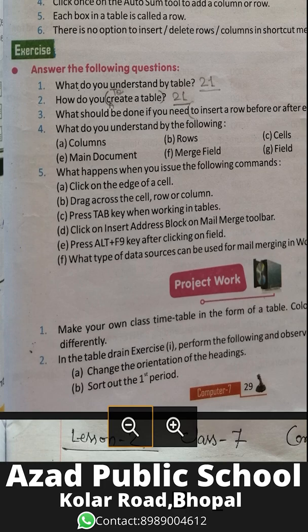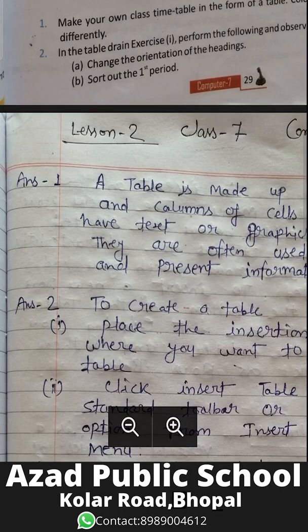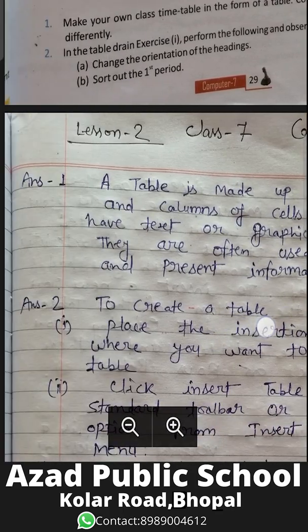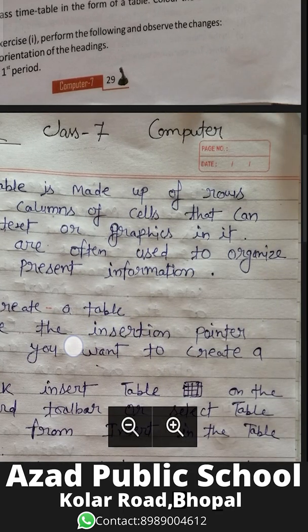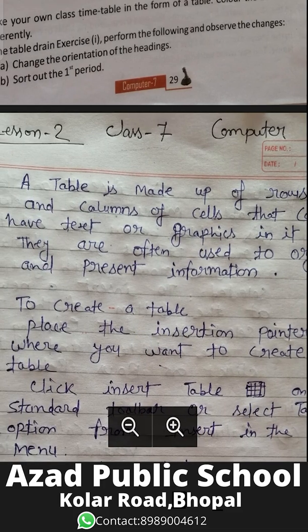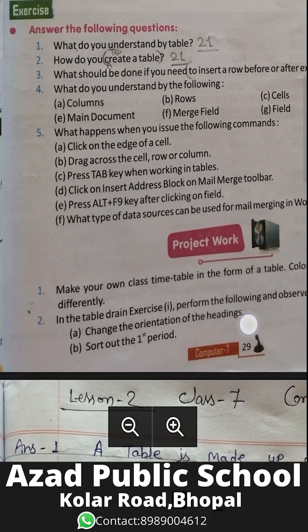Now let's answer the following questions. What do you understand by a table? A table is made up of rows and columns of cells that can contain text or graphics. Tables are often used to organize and present information. In the table there are rows and columns in which you can add text, graphics, or any information.